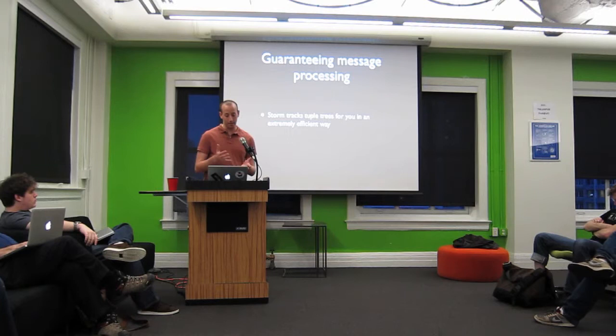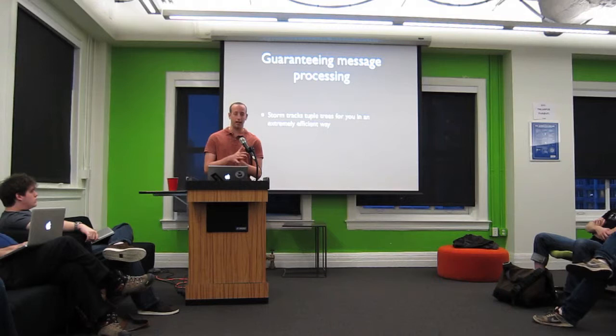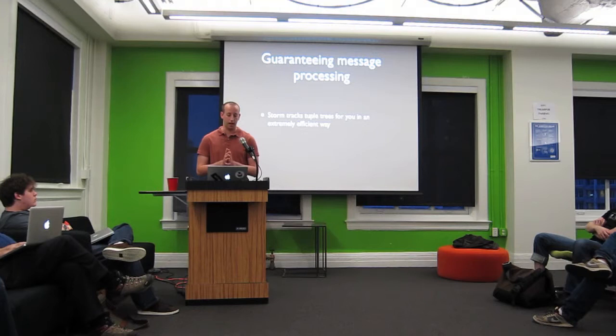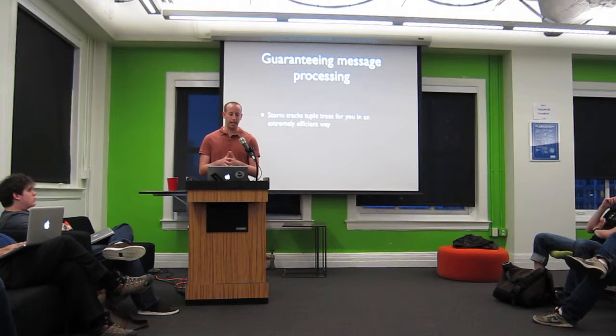One more thing on the tuple tree: you might be wondering, isn't it pretty expensive to track these tuple trees? What if you have massive tuple trees — aren't you going to use up a lot of memory? One of the keys to Storm is that the algorithm for tracking tuple trees is actually super efficient. It uses a constant amount of space to track every spout tuple, regardless of how many pending tuples there are. You could have a billion pending tuples and it'll still just use about 20 bytes of space to track the whole tree. It's a really cool algorithm, all documented on the wiki. This is the key to why Storm is able to get rid of those intermediate brokers and still guarantee processing.